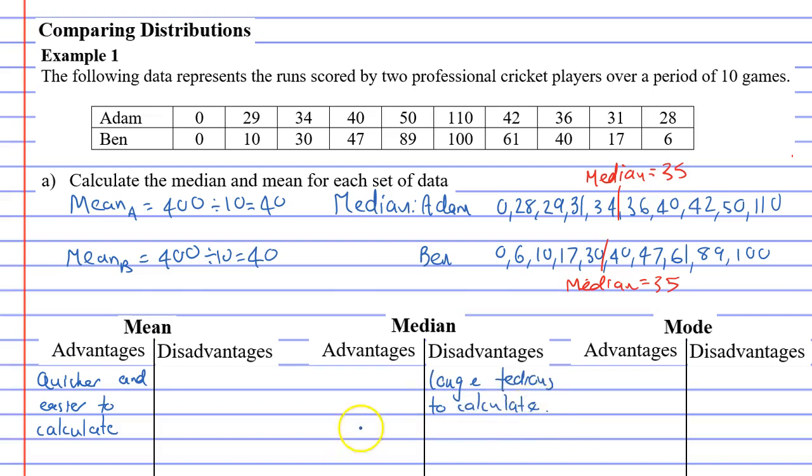All right, so what's the disadvantages of the mean? The disadvantage of the mean, you'll notice that the mean is bigger than the median. The reason this happened, if you look at Adam in particular, Adam has an outlier of 110. Outliers quite often will distort the mean.